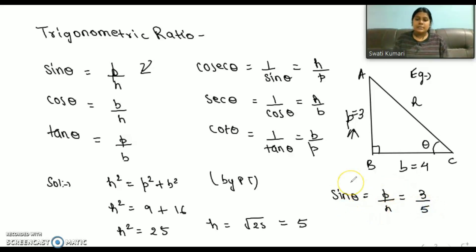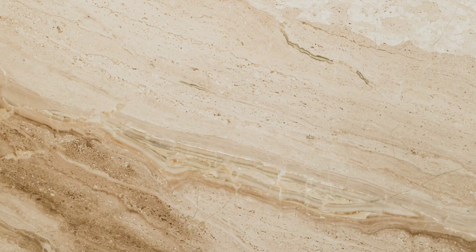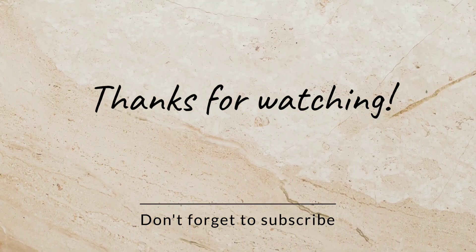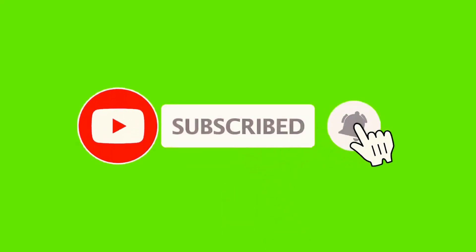Similarly we can find cos θ, tan θ, cosec θ, sec θ, and cot θ by just substituting the perpendicular, base, and hypotenuse values. So this was the concept. I hope you understood. Thank you so much.